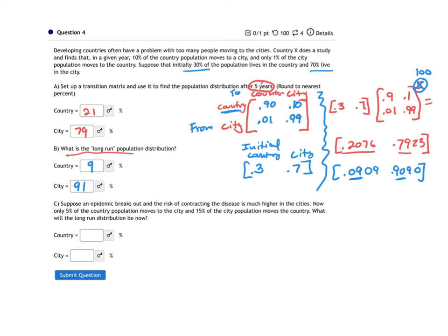And then the last one says, suppose an epidemic breaks out and the risk of contracting the disease is much higher in the cities. Now only 5% of the country population moves to the city, and 15% of the city population moves to the country. What will the long run distribution be now? So my initial distribution hasn't changed. We're still starting with 30% of people in the country and 70% of the people in the city. But my transition matrix has changed.